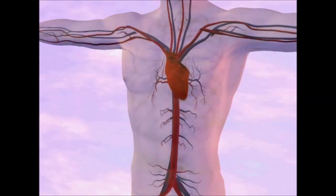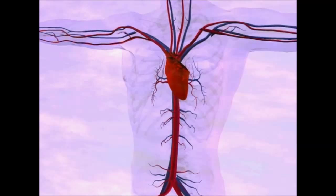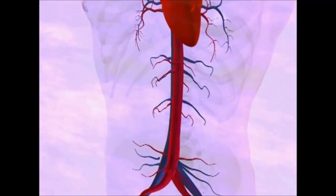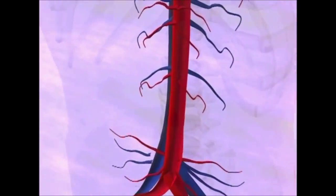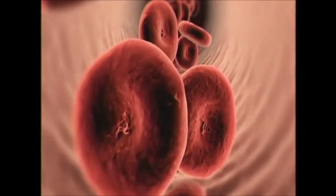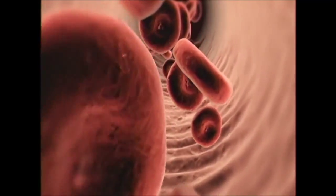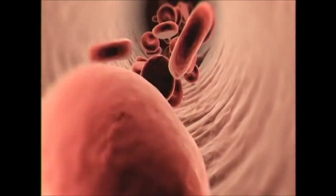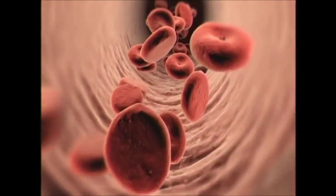From here, the blood travels through the systemic circuit. The blood leaves the heart through the aorta and travels to the body through the arteries. The blood flows along these arteries and consists of red blood cells called erythrocytes.